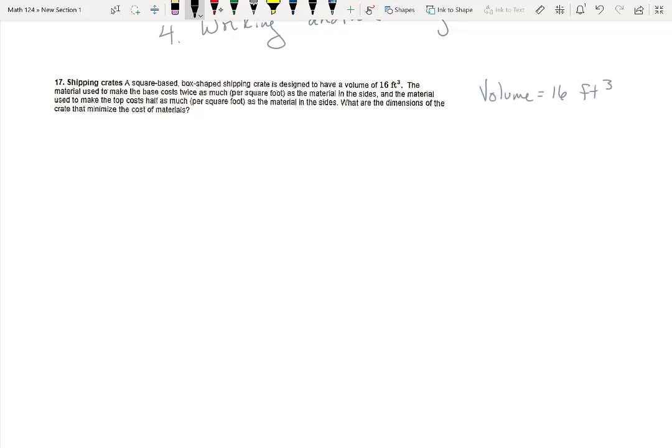The material used to make the base costs twice as much per square foot as the material in the sides, and the material used to make the top costs half as much as the material in the sides. What are the dimensions of the crate to minimize the cost?